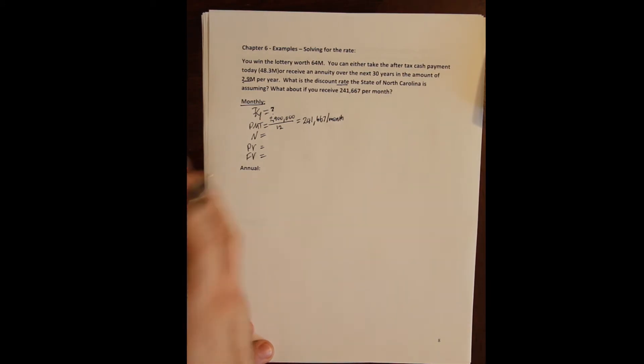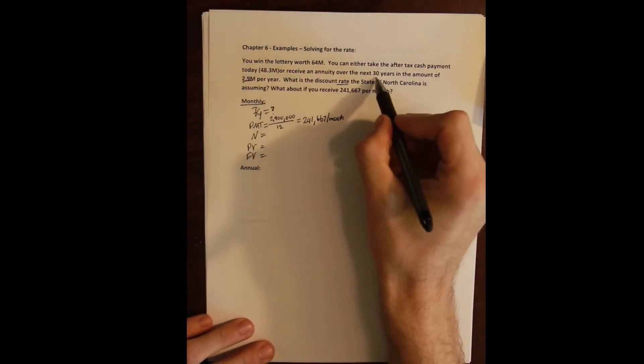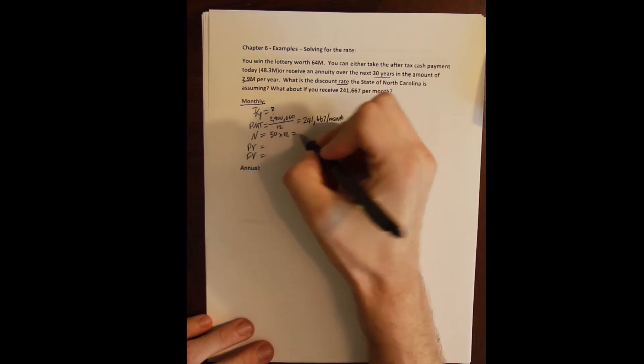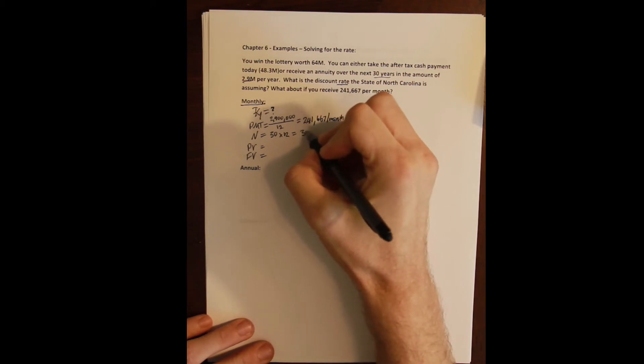Okay, so that's what the annuity would pay us, which I don't know about you guys but that sounds pretty good to me. Our N is the number of payments. Now we get this annuity for 30 years, but again we want months, so we convert years to months by multiplying by the number of months to get 360 months.